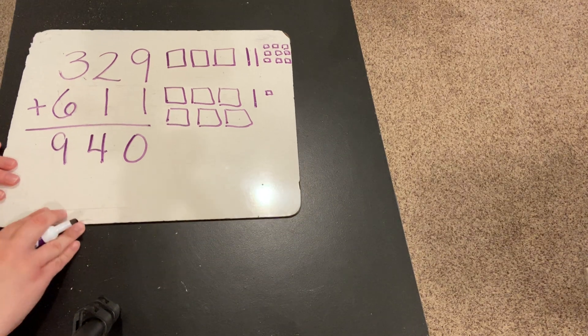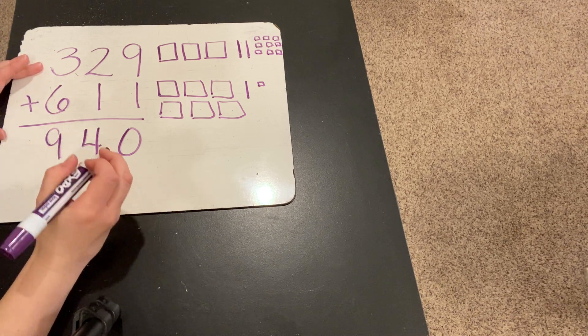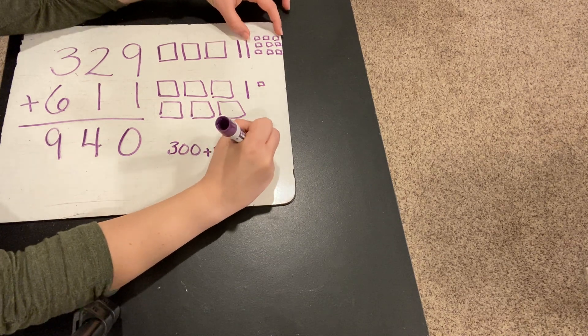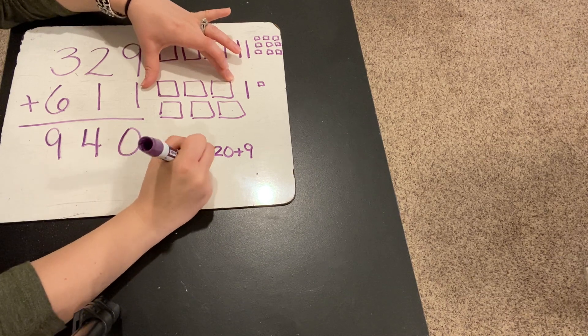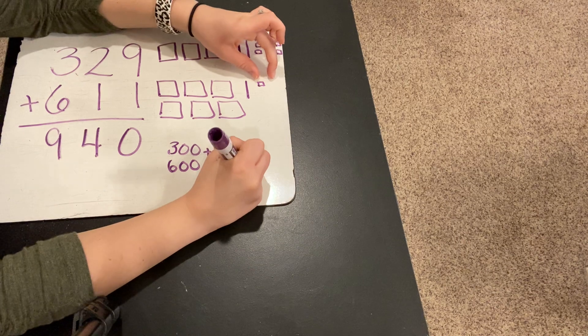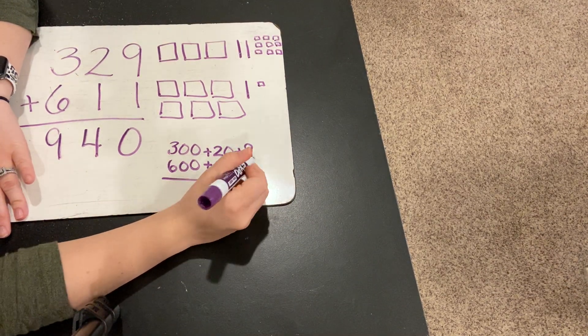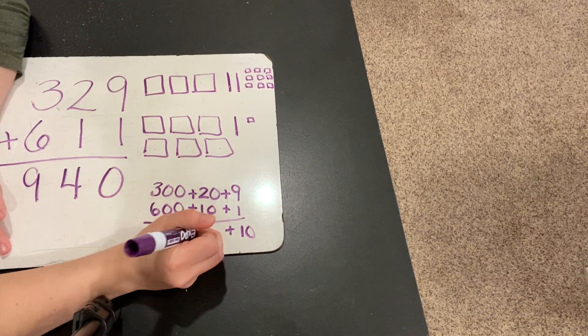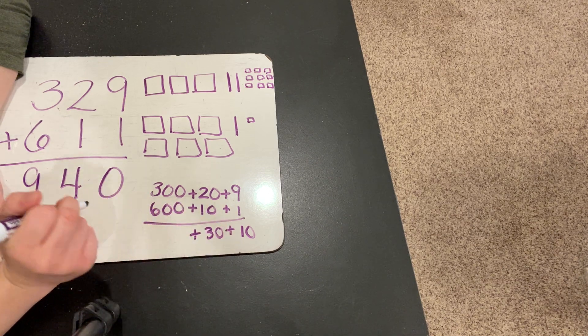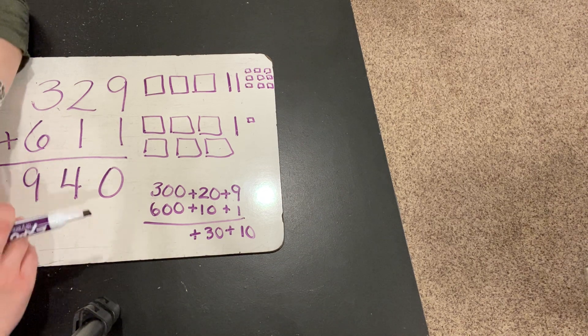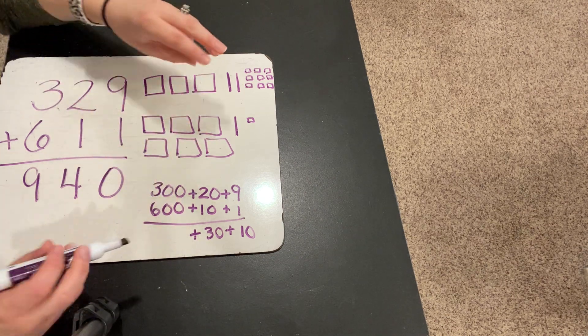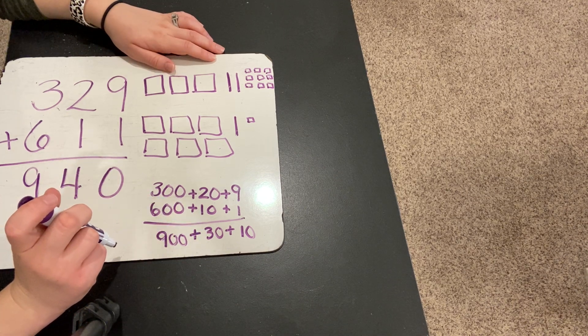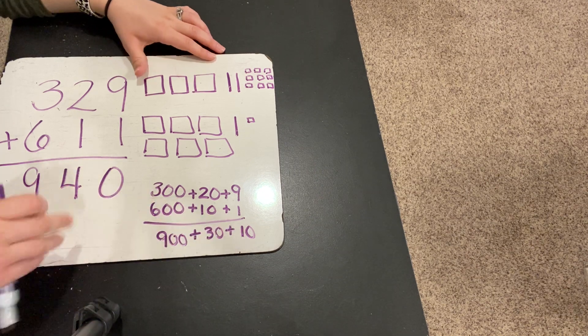Let's try that one more time with expanded form now. So, let's stretch it out. 329. We have 300 plus 20 plus 9. And then we have 600 plus 10 plus 1. Okay, and let's add those together. 9 plus 1 equals 10. 20 plus 10 equals 30. And then 300 plus 600. Let's flip that around and do 600 plus 300. So, 600, 700, 800, 900. And then add them together. 900 plus 30 is 930. 930 plus 10 equals 940.